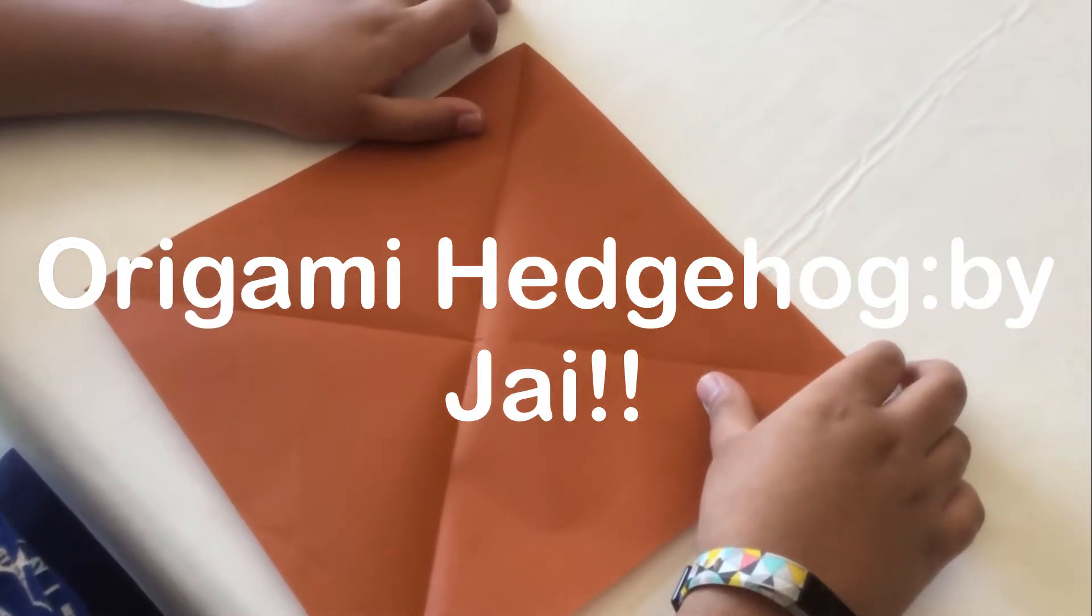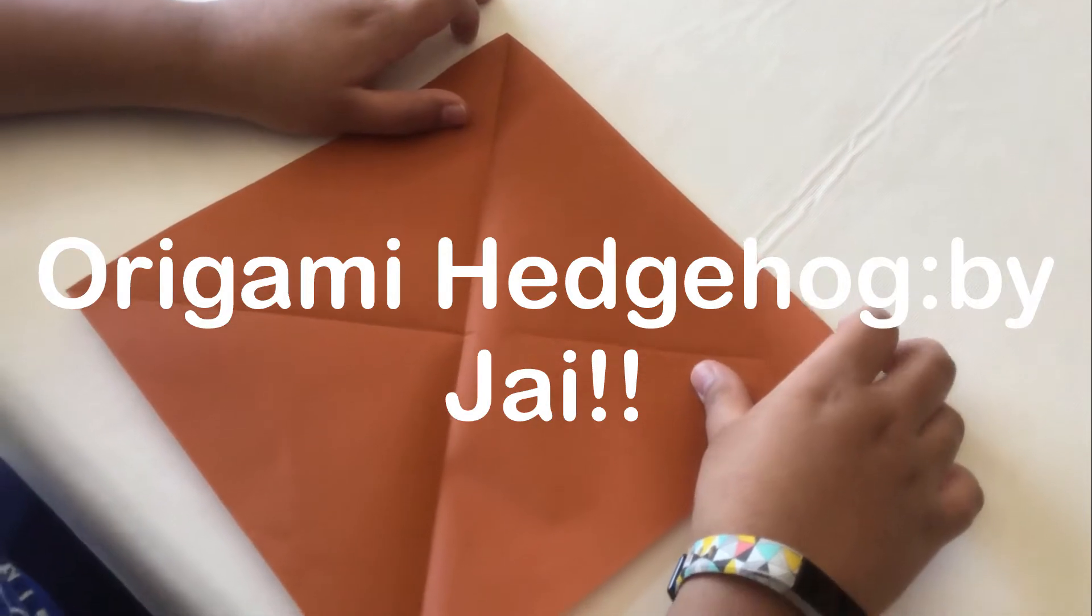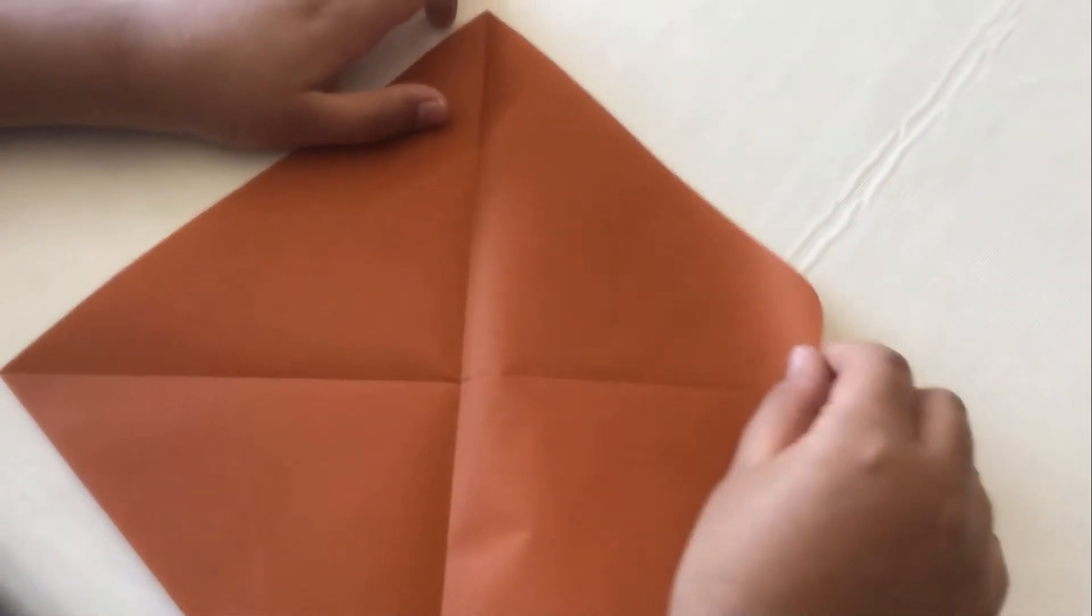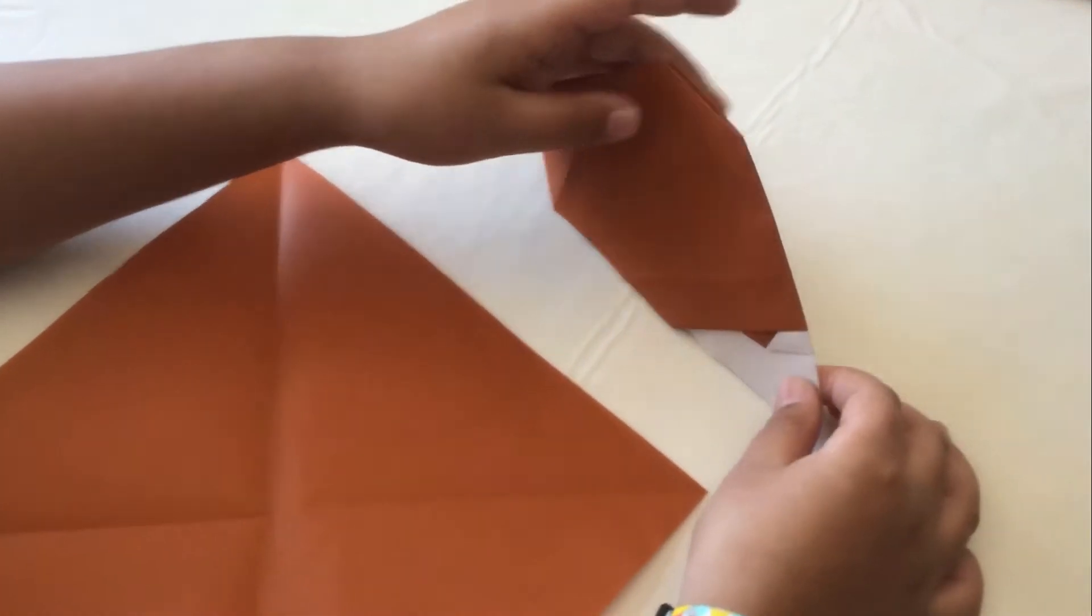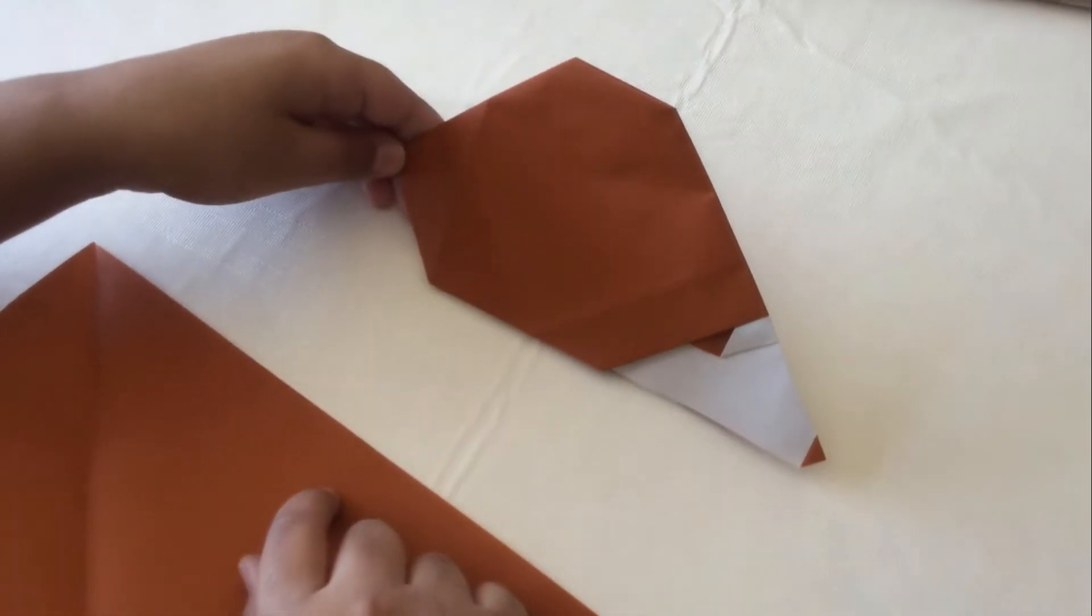I will use 20 by 20 centimeters of origami paper with color on one side and no color on the other. And this will be our final product. This will be our hedgehog.